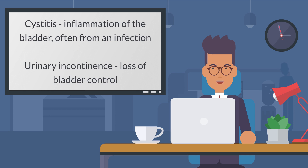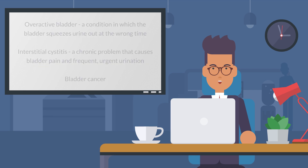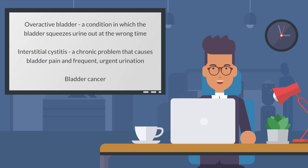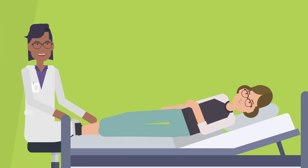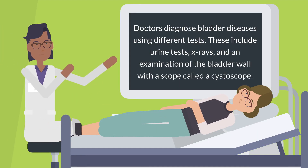Urinary incontinence, loss of bladder control. Overactive bladder, a condition in which the bladder squeezes urine out at the wrong time. Interstitial cystitis, a chronic problem that causes bladder pain and frequent urgent urination. And bladder cancer.